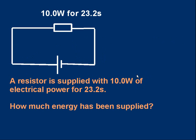Quick question to get us going. Suppose we have a cell providing power to a resistor. The resistor is supplied with 10 watts of electrical power for 23.2 seconds. How much energy has been supplied? Energy is power times time. It's 10 times 23.2, 232 joules. Simple as that.